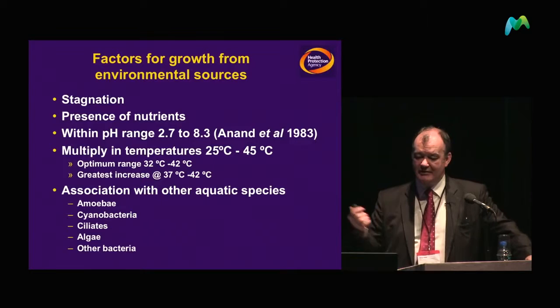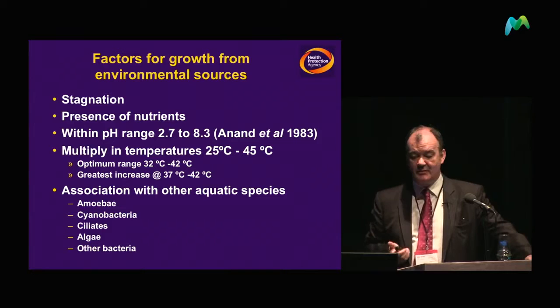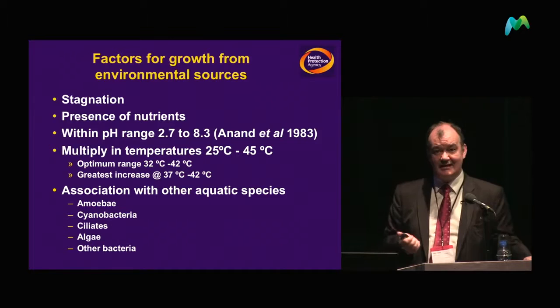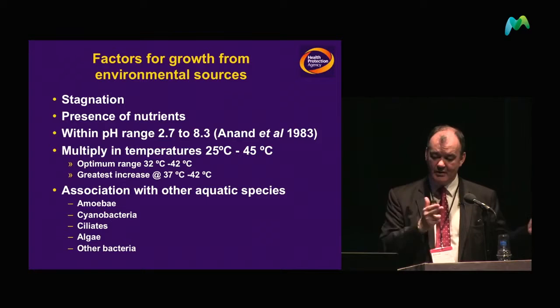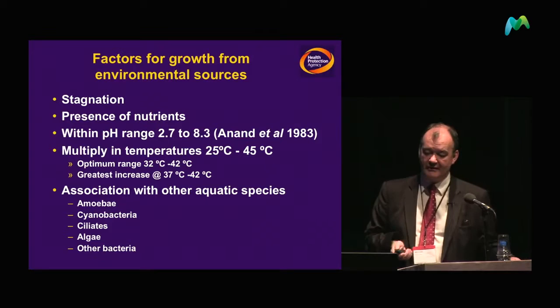Moving on to environmental factors — five elements are fairly key to the survival of Legionella in the environment: stagnation, where any pooling water is a potential source; nutrients; a fairly wide pH range tending toward the acidic; temperature, critically between 25 and 45 degrees; and association with other aquatic species.